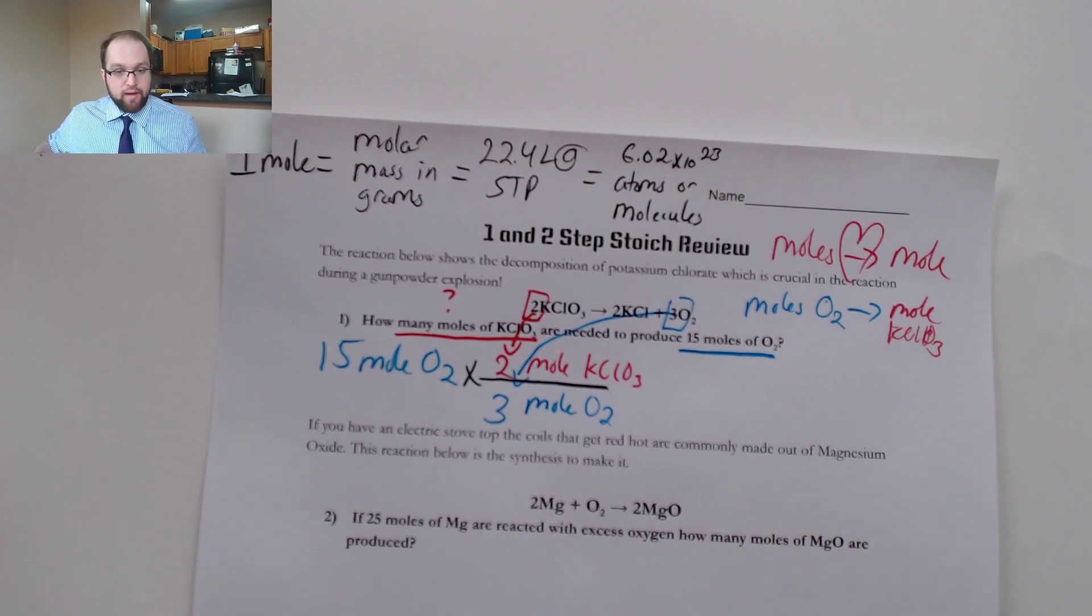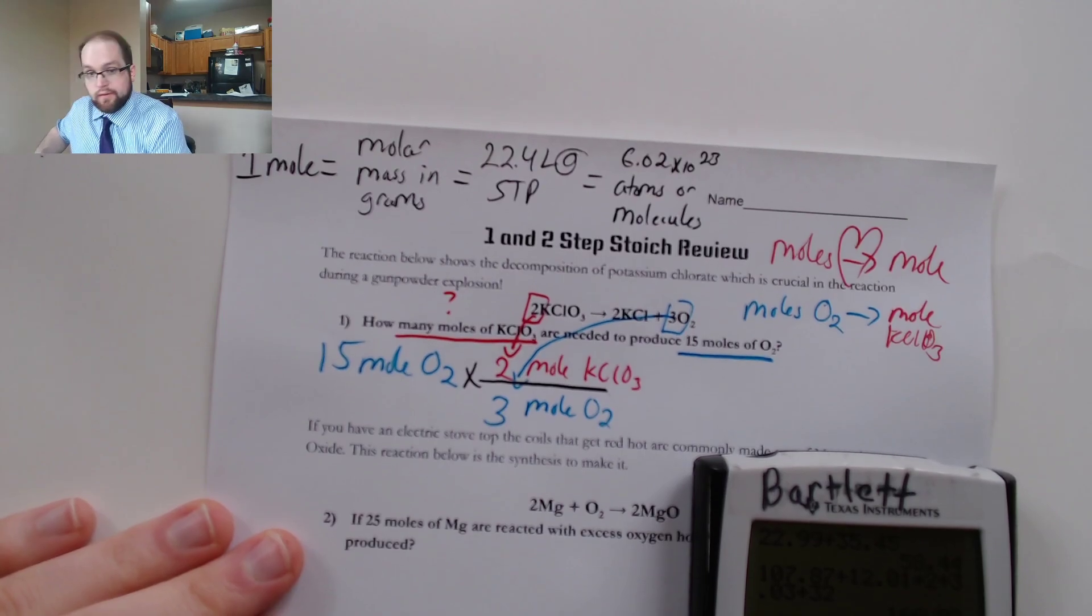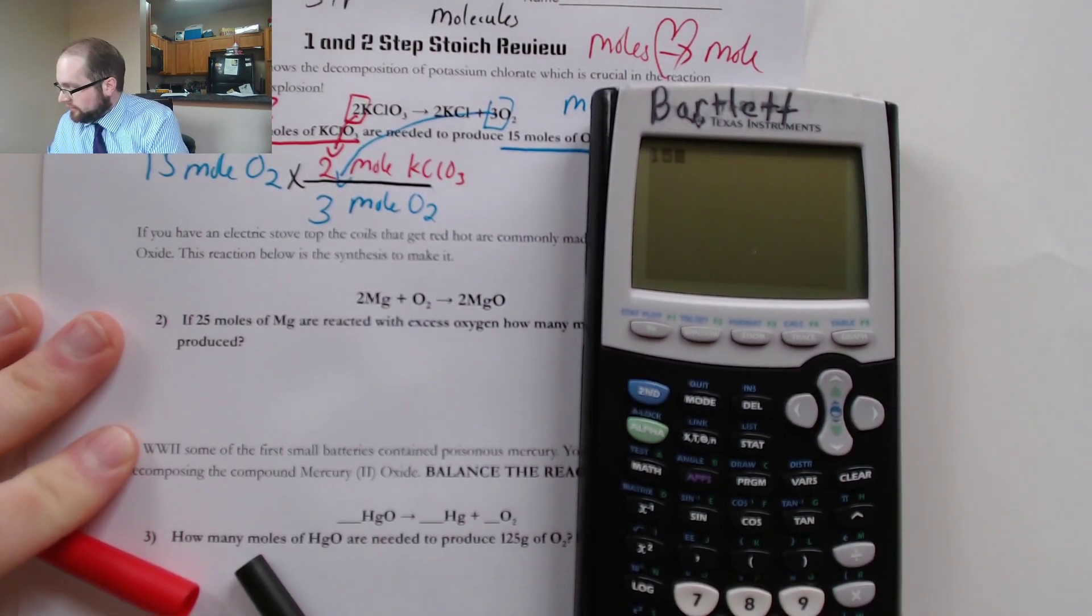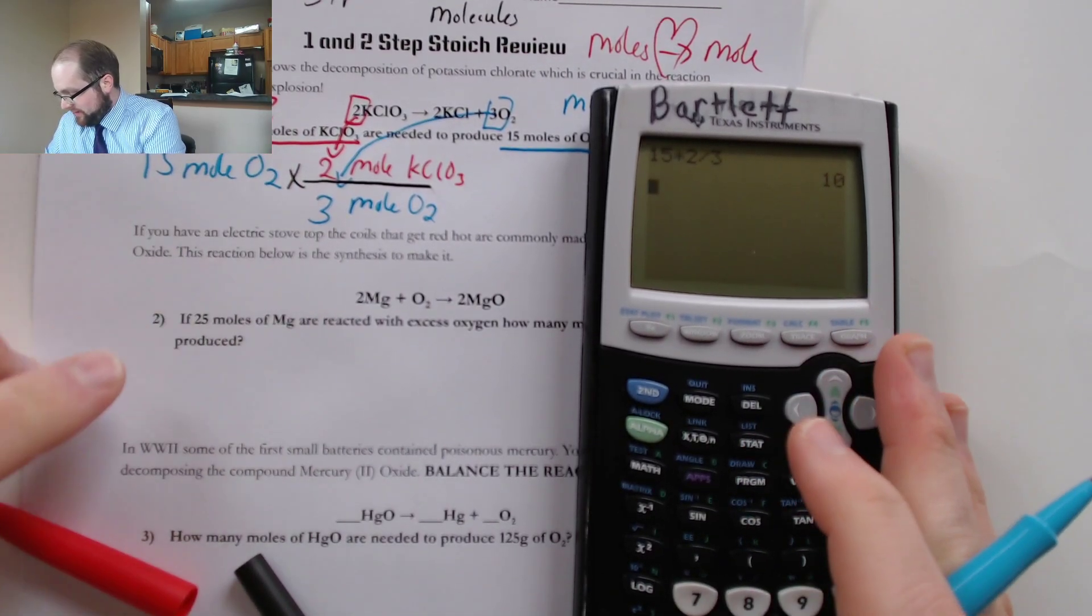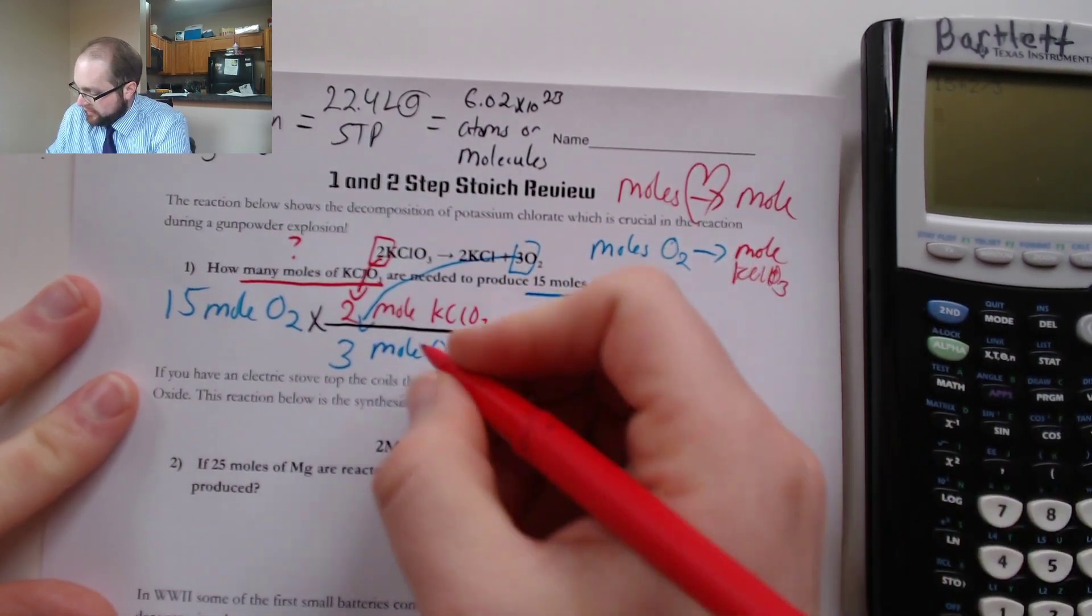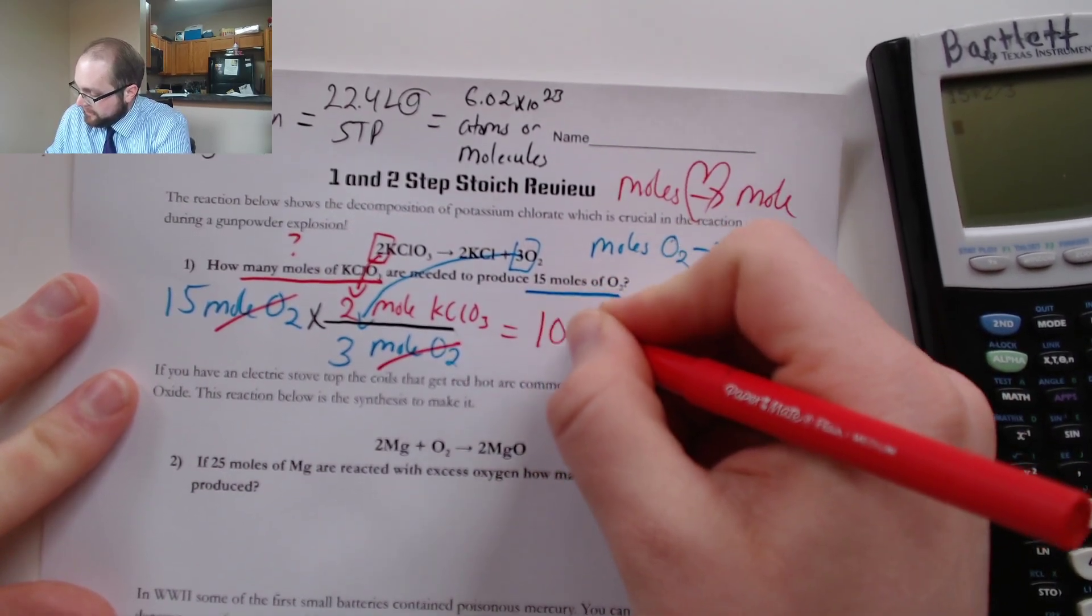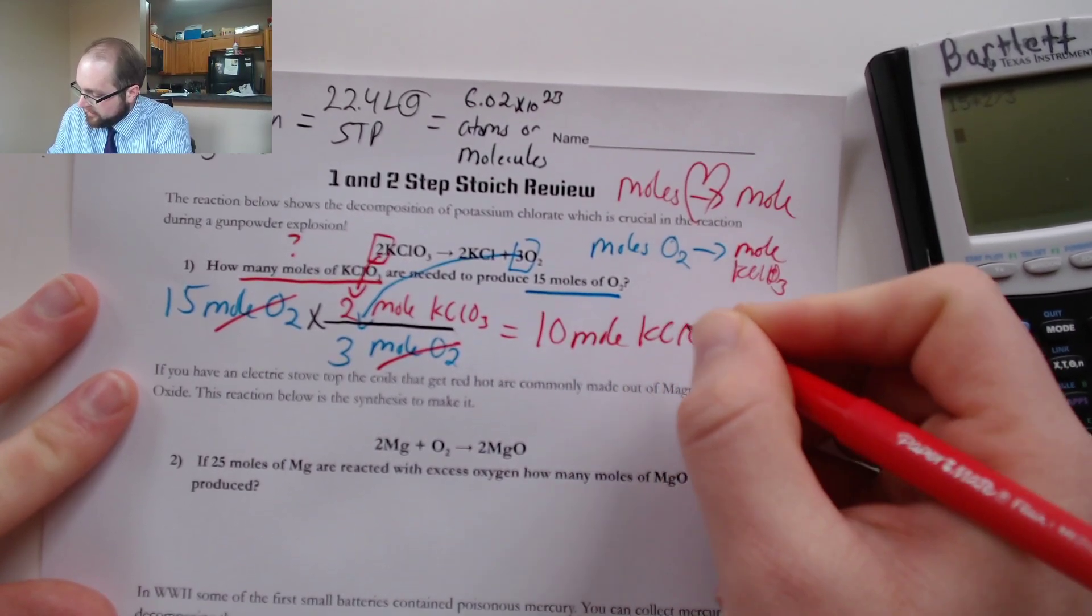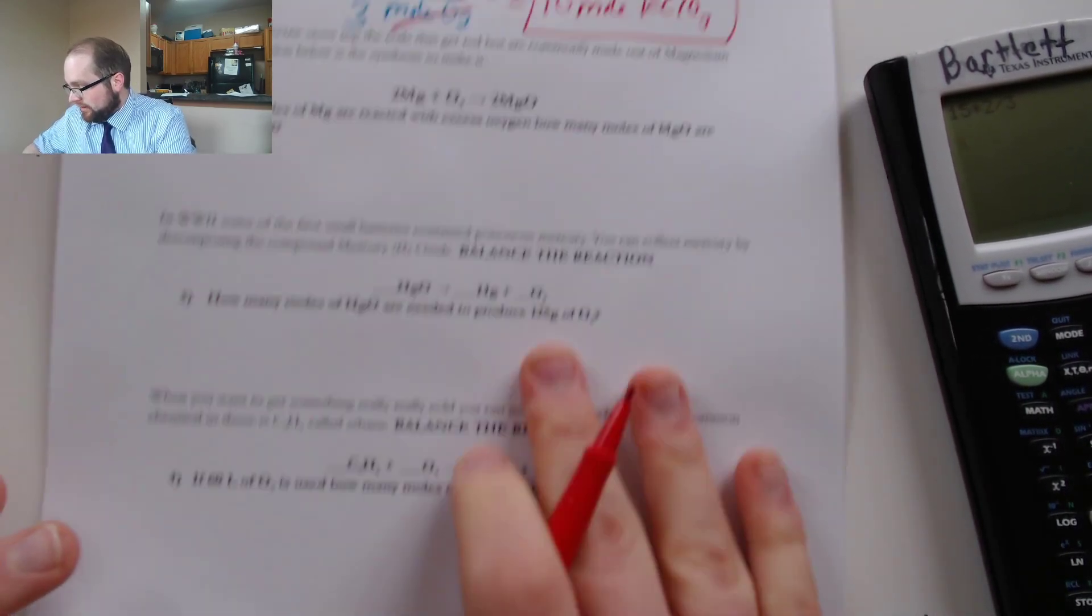So all I have to do in my calculator now is just take that 15 moles, 15 moles of O2 times 2 on top divided by 3 on bottom and I get a final answer of 10. Double checking my units here you can see that moles of O2 will cancel and I'll be left with 10 moles of KClO3. Put a box around it because I'm awesome and we can check down at the bottom and make sure yep that was one of our choices.